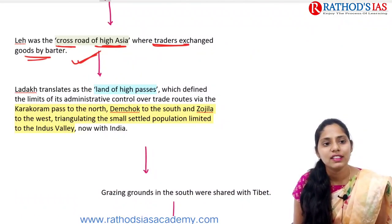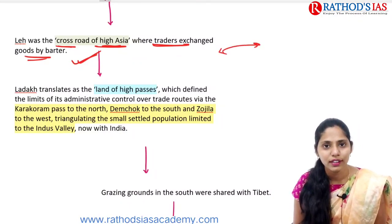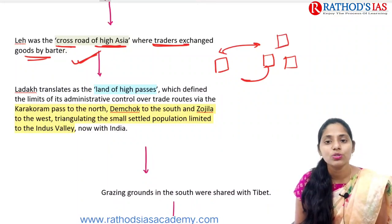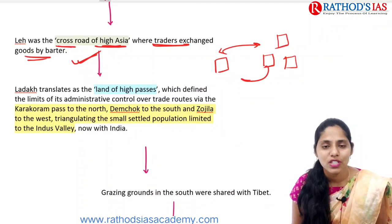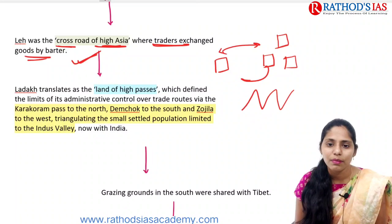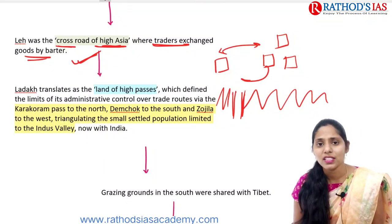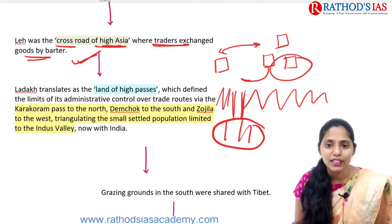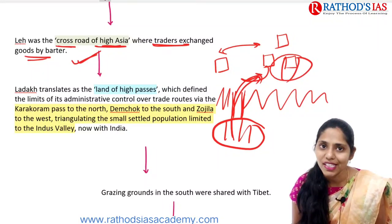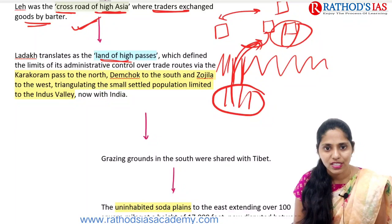Ladakh mainly translates as 'land of high passes.' Passes are gaps in mountainous chains that provide a way to connect people from one area to another. Without passes, traversing between mountains would be very difficult. Ladakh contains many such passes, which is why it is called the land of high passes. In this region, trade was historically very prominent, with a barter system being the primary mode of exchange.